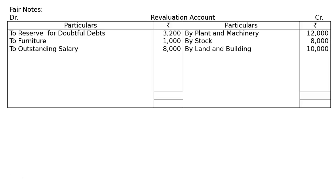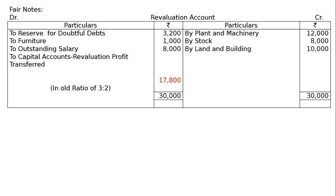And the last item: to outstanding salary Rs. 8,000 — an additional liability of Rs. 8,000 being outstanding salary payable to employees, not included in the outstanding liabilities in the balance sheet. Partners decide to show this liability in the books of the reconstituted firm. Total credit side Rs. 30,000; deduct Rs. 12,200 to get revaluation profit of Rs. 17,800, transferred to capital accounts.